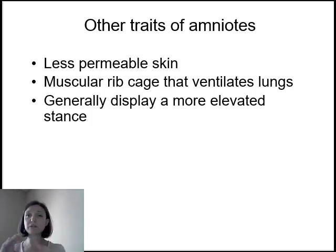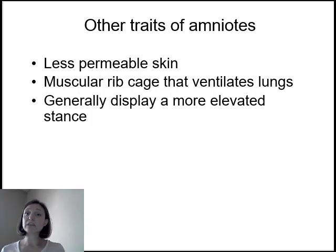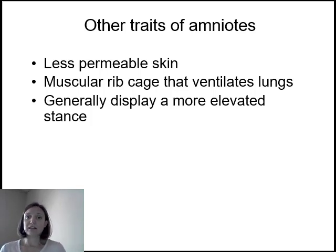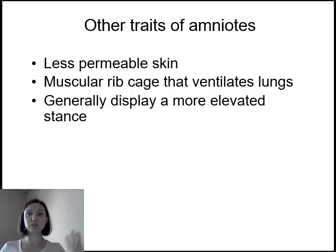Tied into that amniotic egg, we see some other key traits of amniotes. The skin of amniotes is now less permeable to water — that's good and bad. It prevents desiccation, but it also means they can no longer gas exchange across their skin like amphibians can. Because they can no longer gas exchange across their skin, they have a more muscular rib cage that allows for ventilation of the lungs. Many amphibians gulp air with their throat muscles, but in amniotes, rib cage muscles expand the rib cage and provide negative pressure so that air fills the lungs. Most amniotes also display a more elevated and upright stature, which is more efficient for walking on land.